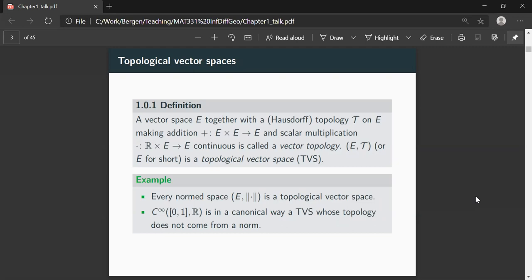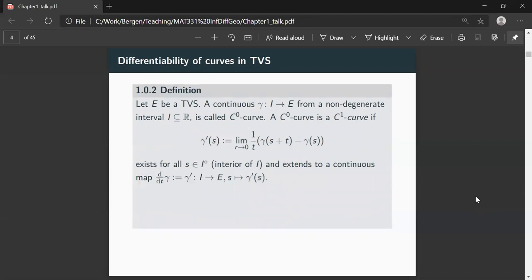Once we have a topological vector space in place, we can define what we mean by a differentiable curve. So first of all, we fix a topological vector space, a continuous map from a non-degenerate interval into this vector space. What I mean by non-degenerate interval is an interval which does not only consist of one point. Also in the following, whenever I will be talking about an interval, the assumption will be that the interval consists of more than one point. Continuous curves are called C^0 curves and a continuous curve is a C^1 curve if the limit exists of this differential quotient.